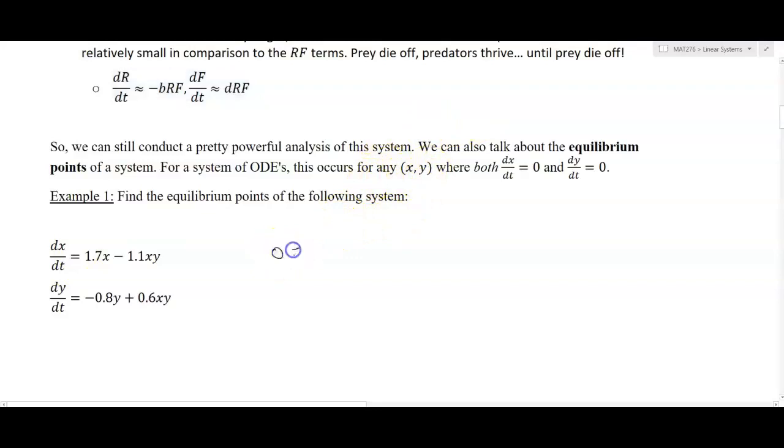If I set dx/dt equal to zero, I'm going to get 1.7x minus 1.1xy. And here I'll get zero equals negative 0.8y plus 0.6xy. We can solve this using substitution. This is a nonlinear system, so they can get pretty challenging to solve. But I can factor out an x from the first equation.